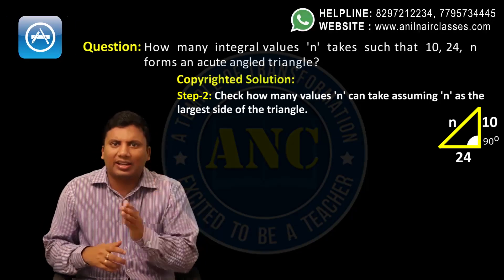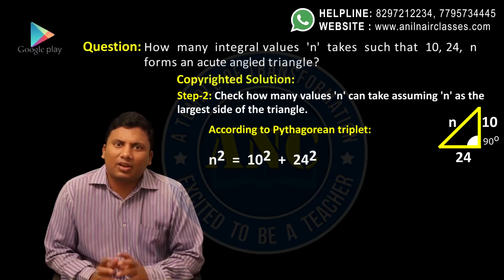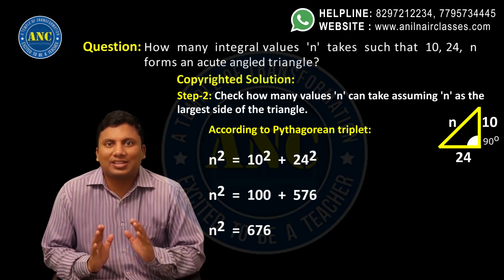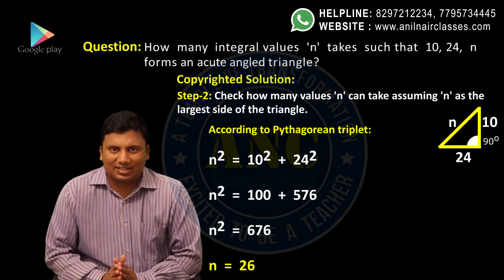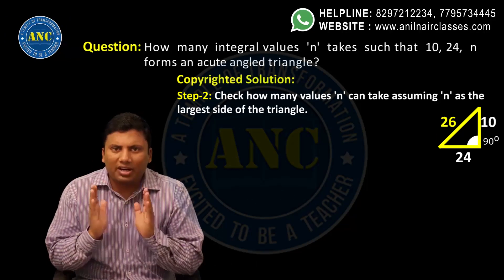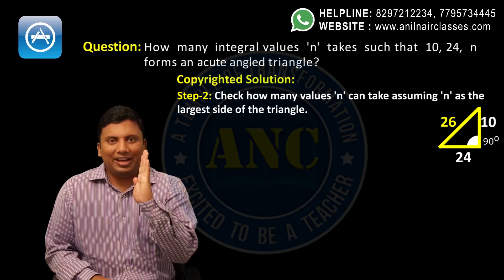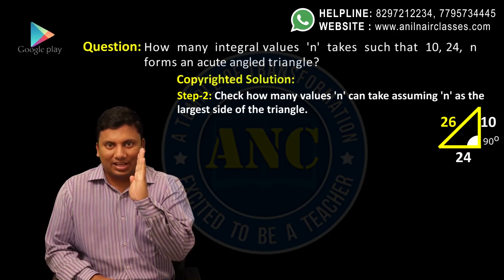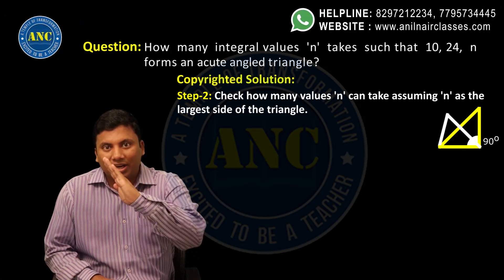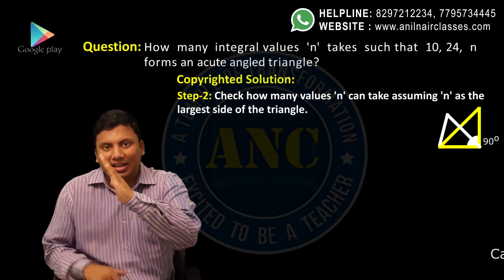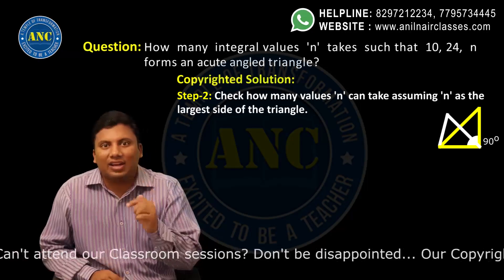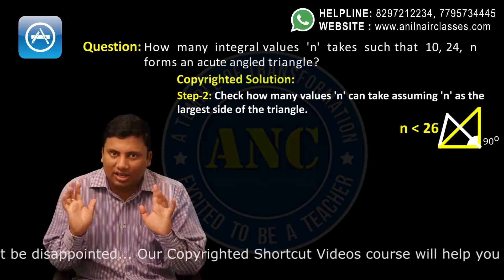For sides 10, 24, n: n² = 10² + 24² = 100 + 576 = 676, so n = 26. The right-angled triangle has sides 10, 24, 26. For an acute-angled triangle, theta must be less than 90°. Geometrically, the height moves to the right, which decreases the hypotenuse value. So if n = 26 gives a right angle, then for an acute-angled triangle, n must be less than 26.